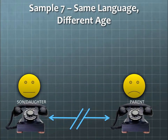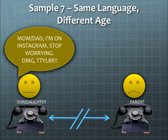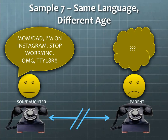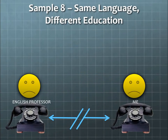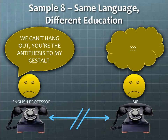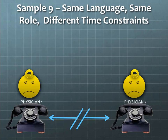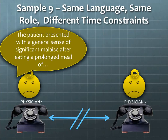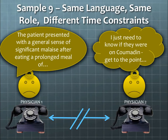Next scenario: same language but different age. Your son or daughter says, 'Mom or dad, I'm on Instagram. Stop worrying. OMG TTY LATR.' The parent has no idea what that means — without an interpreter, communications fail. Next: same language but different education, where an English professor says, 'We can't hang out, you're the antithesis to my gestalt.' Communications fail. Finally, same language and same role but different time constraints: two physicians on the phone, and one says, 'The patient presented with a general sense of significant malaise.' The other physician is thinking, 'I just need to know if they are on Coumadin — please get to the point.' Again, communications fail.